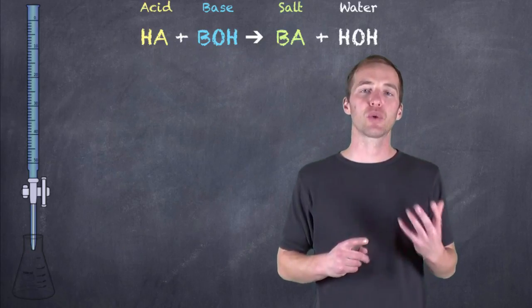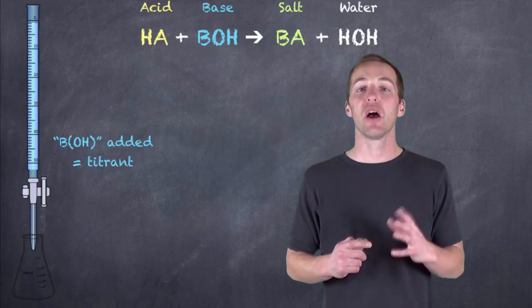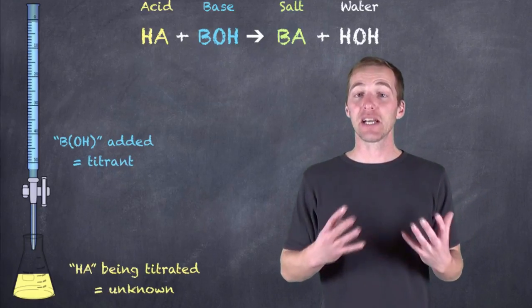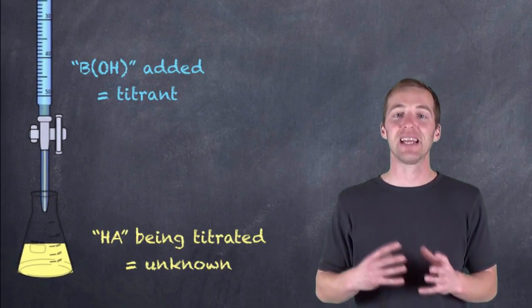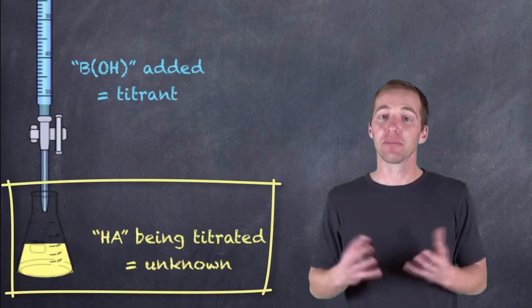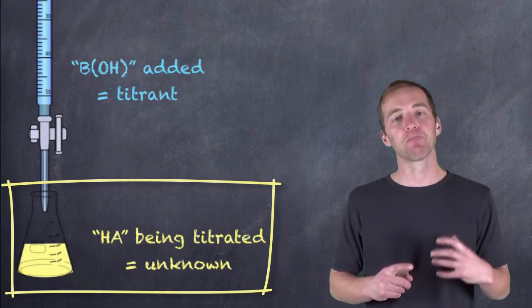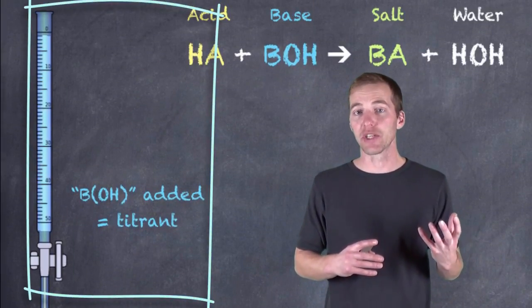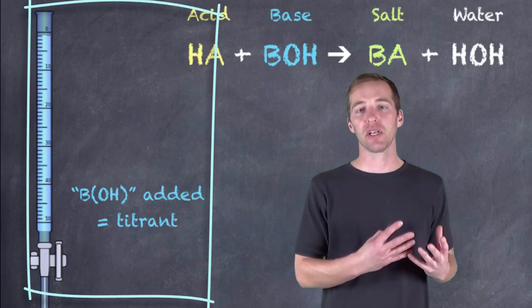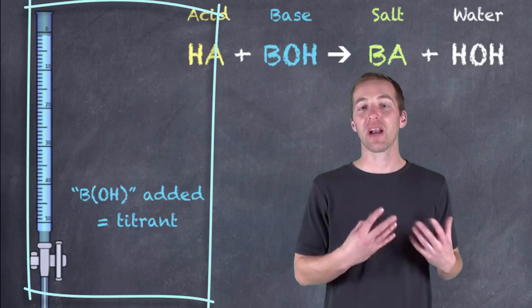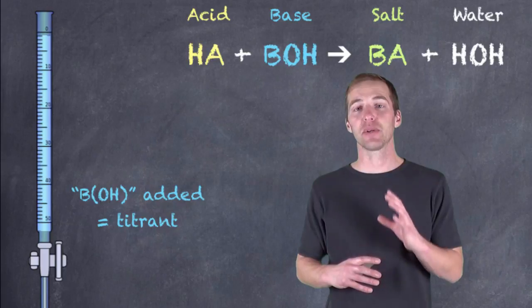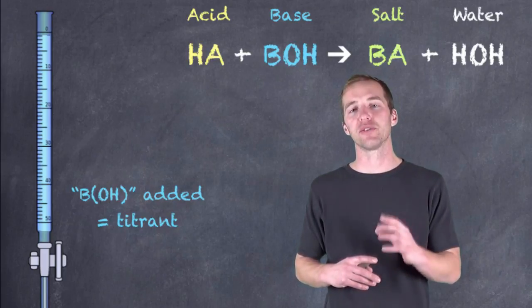Let's take a look at a scenario where we're trying to establish the concentration of an unknown acid. The substance being titrated, we often refer to that as the analyte — that is the substance being analyzed. In this case it is the acid, but it could just as easily be a base. The substance that we know the concentration of, we refer to that as the titrant. If our unknown is an acid, our titrant is going to be a base, and vice versa. Remember, the titrant is the substance whose concentration you always know.